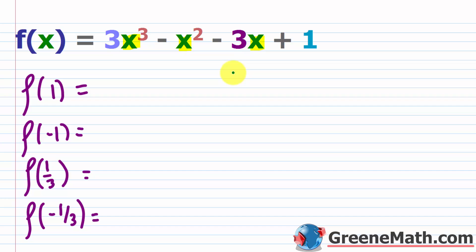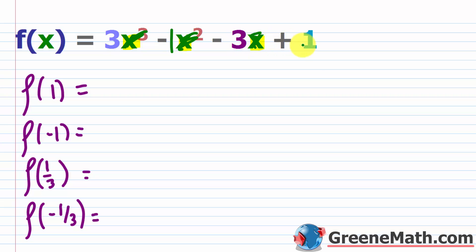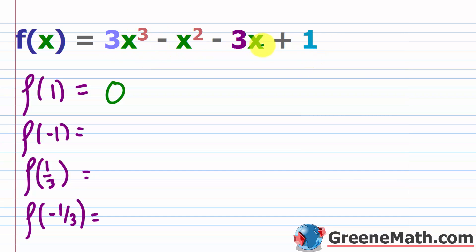To test f(1): since 1 raised to any power is 1, we get 3 − 1 − 3 + 1 = 0. So 1 is indeed a zero of this polynomial function.